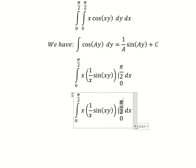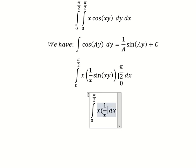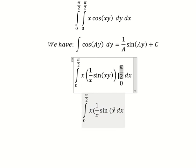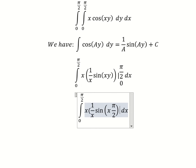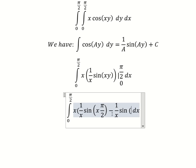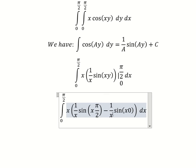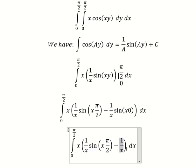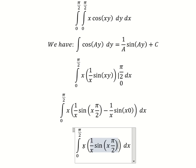So I will put π/2 here and zero here, so we have like this. Sine of zero equals zero, so they simplify.